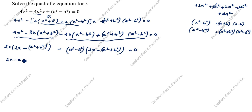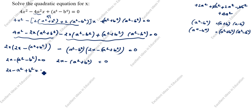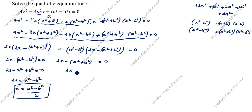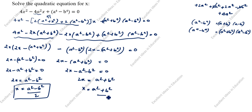So we get (2x - (a² + b²))(2x - (a² - b²)) = 0. Setting each factor to zero: first, 2x - (a² + b²) = 0, so 2x = a² + b², giving x = (a² + b²)/2. Second, 2x - (a² - b²) = 0, so 2x = a² - b², giving x = (a² - b²)/2.